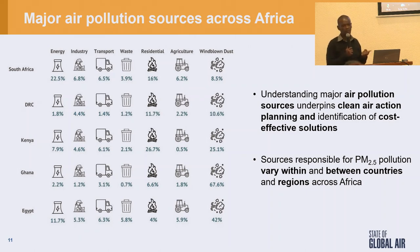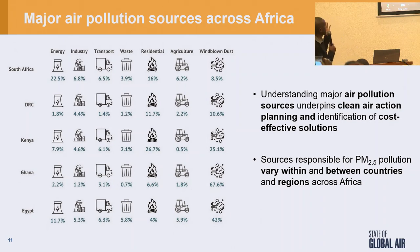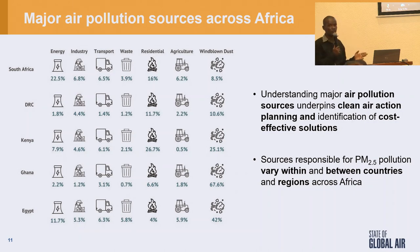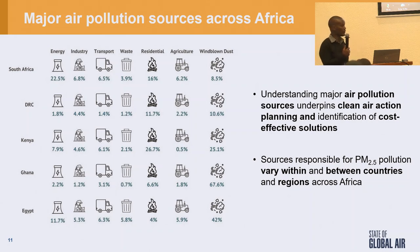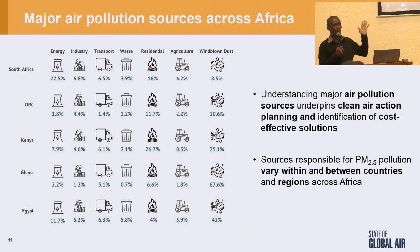Briefly, on sources — this is a project we had called GBD Maps, where we try to map air pollution sources by country. You can see some obvious trends: South Africa shows 22% from energy production, while Kenya shows 26% residential, which could be open burning. Ghana, DRC — it's a different dynamic that varies by location on the continent. The countries have been carefully selected to represent sub-regions — east, west, north, south, and central.